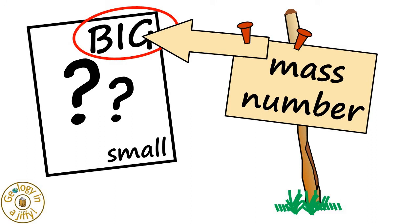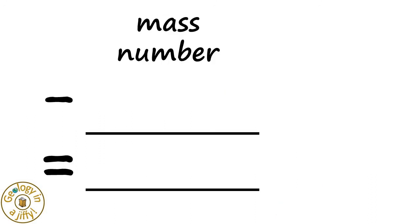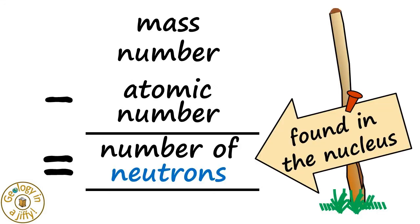The larger number is the mass number. If we know the mass number, then subtract the atomic number, we then know the number of neutrons in the nucleus of the atom.